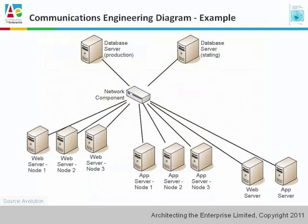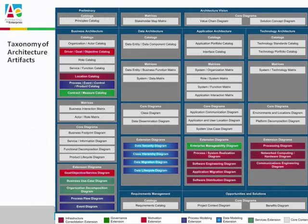The communications engineering diagram shows how various pieces of infrastructure are connected together and how they communicate. From here, we've finished the technology architecture. Now we can go on to the remaining phases of the architecture development method. There are fewer artifacts developed here, and we won't be covering any more artifacts in this presentation.